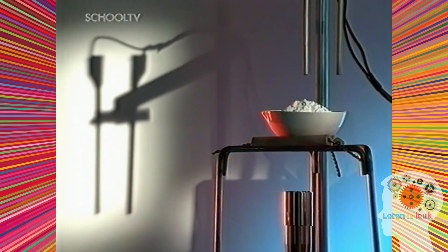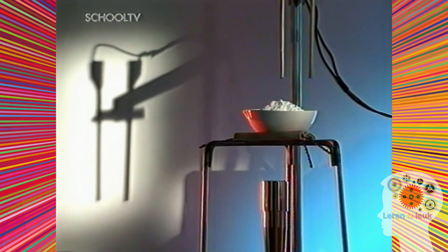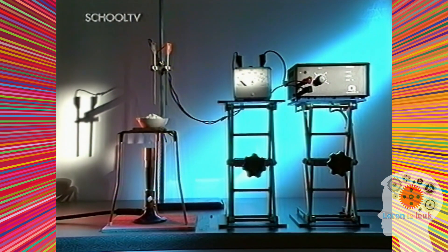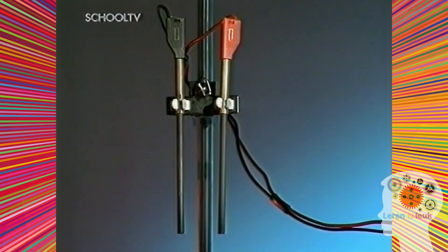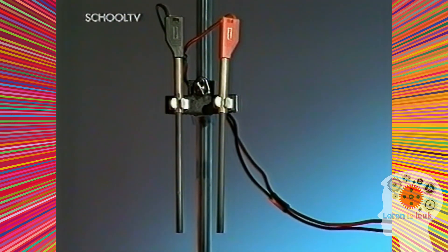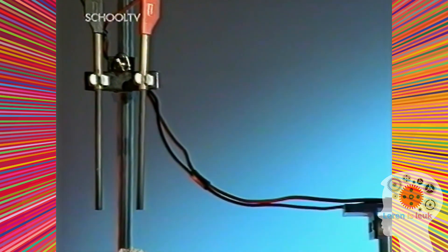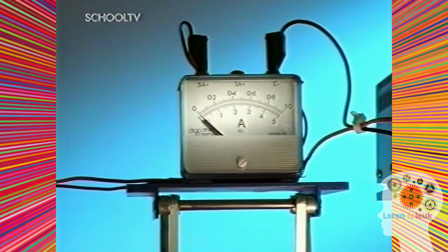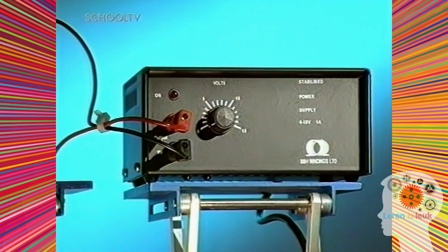Een verbinding kan worden ontleed met behulp van elektriciteit. Dat gebeurt door er elektrische stroom doorheen te voeren. Een proces dat elektrolyse heet. Er wordt een stroomkring gemaakt met twee koolstofelektroden, een stroommeter en een stroombron.